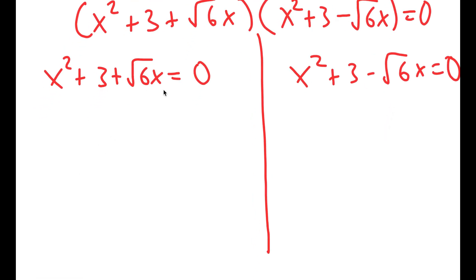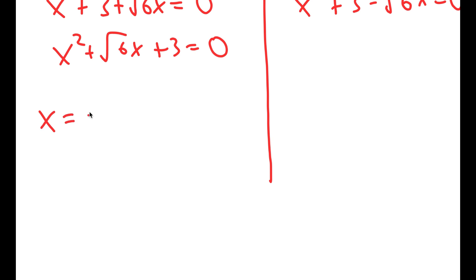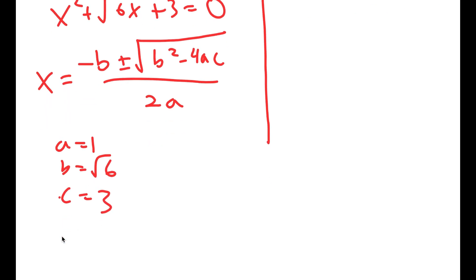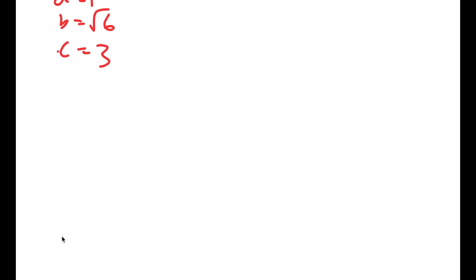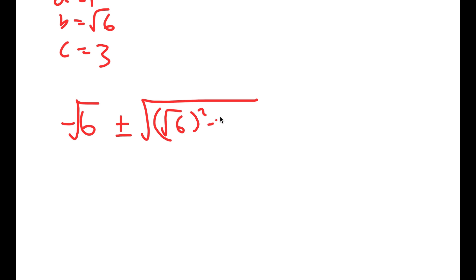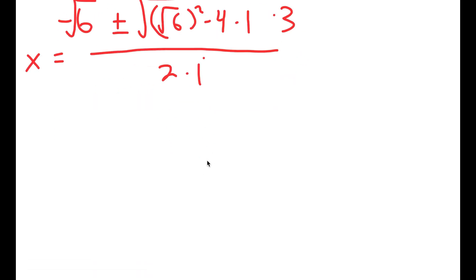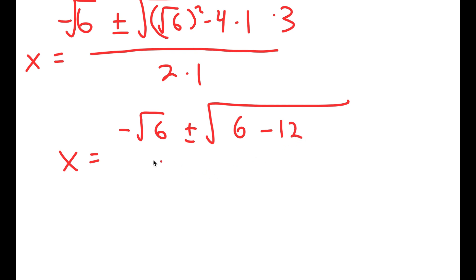To solve this, we can use the quadratic formula. I'm going to rewrite the first equation as x squared plus the square root of 6 times x plus 3 equals 0. The quadratic formula is negative b plus or minus the square root of b squared minus 4ac, all over 2a. In this case, a is 1, b is the square root of 6, and c is 3. So this turns into negative square root of 6 plus or minus the square root of the square root of 6 squared minus 4 times 1 times 3, all over 2 times 1.